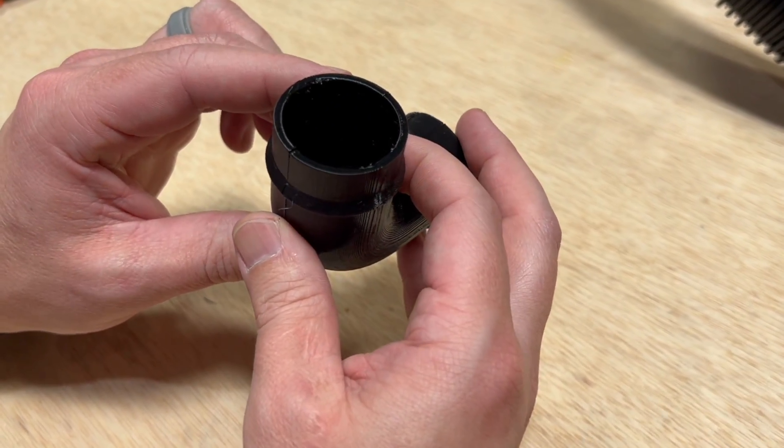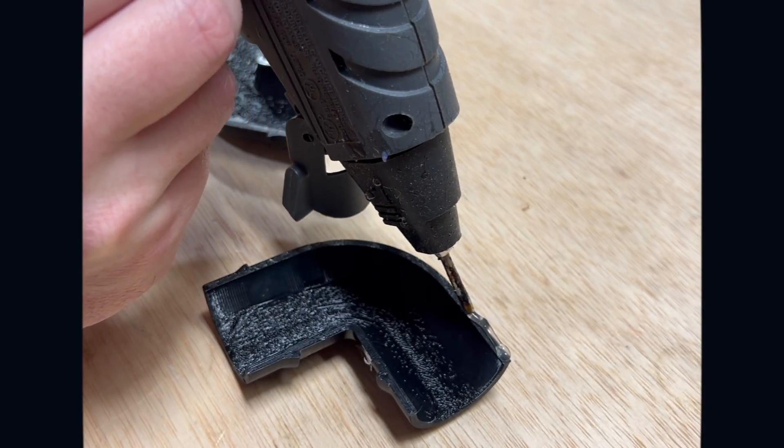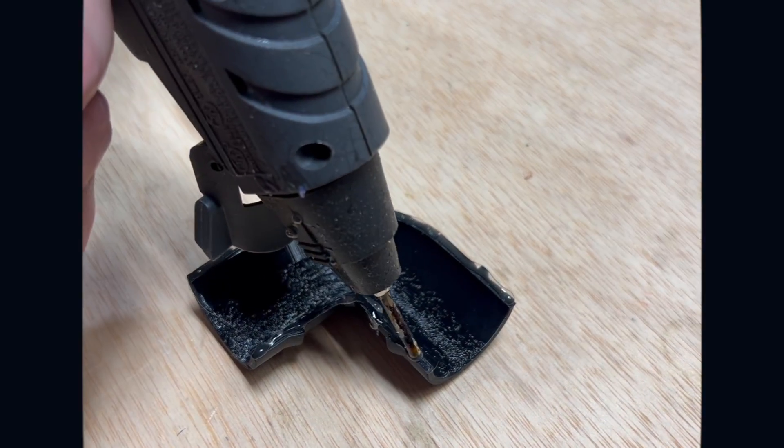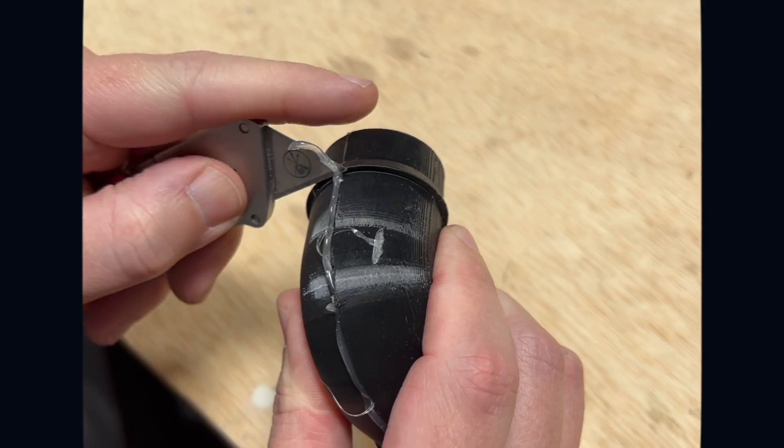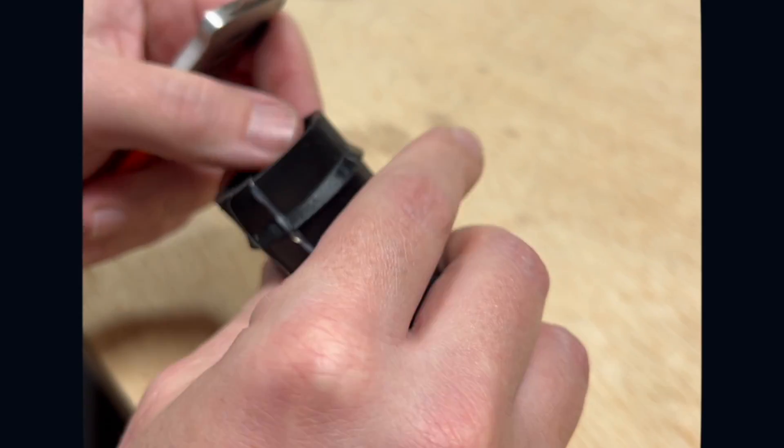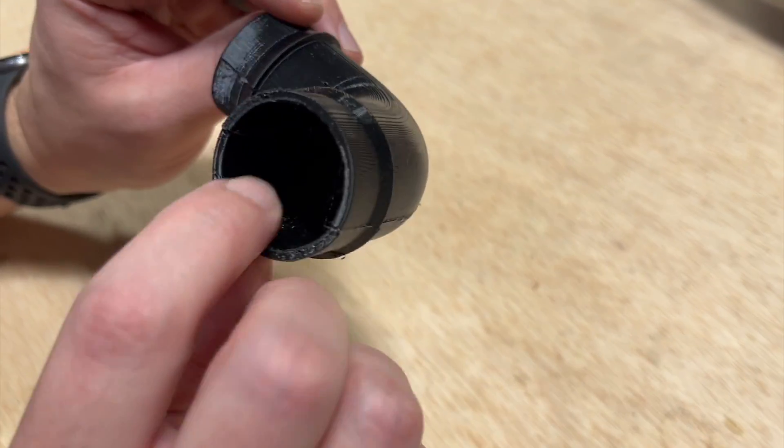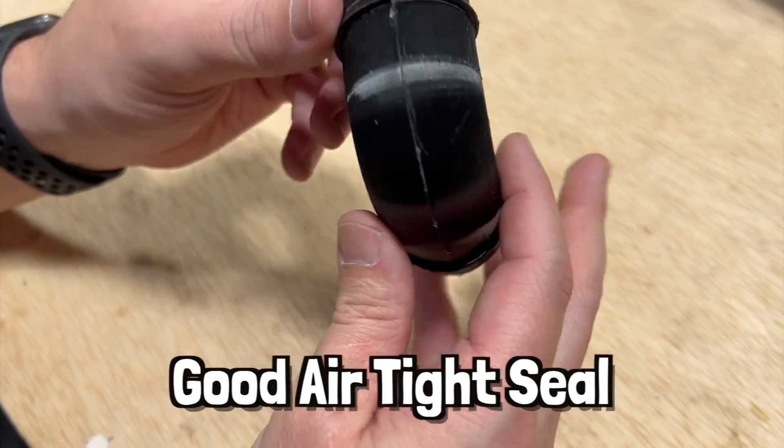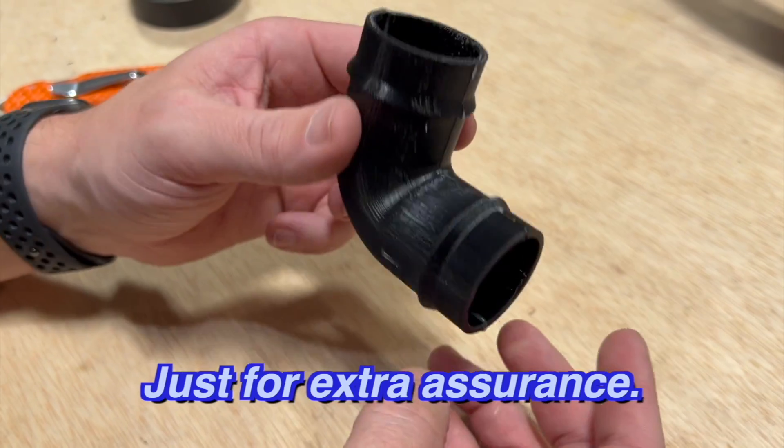So let's hot glue this together. It's stuck pretty well together right now I think we have a good airtight seal around it with that hot glue but we're going to put some electrical tape around this just for extra assurance.